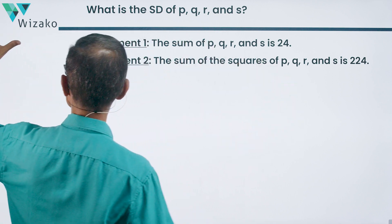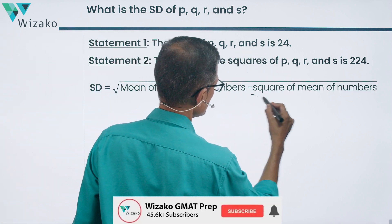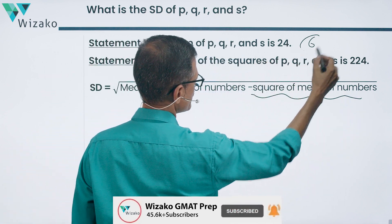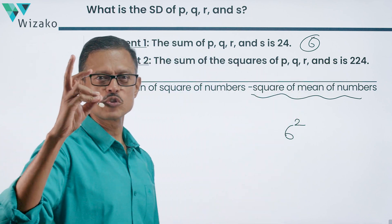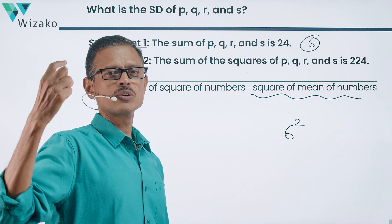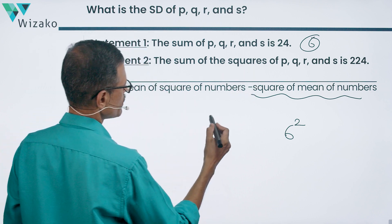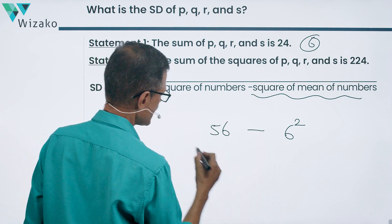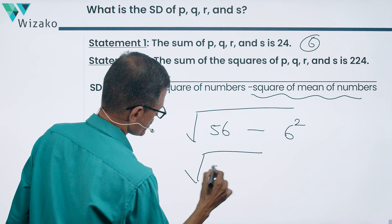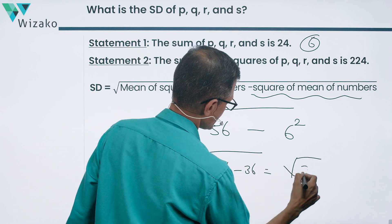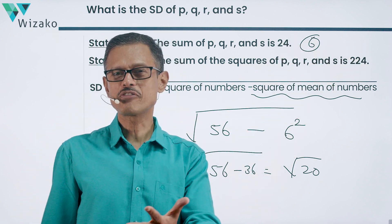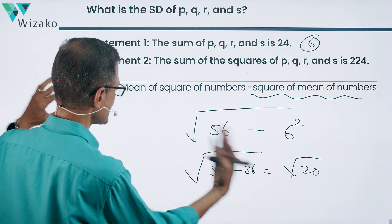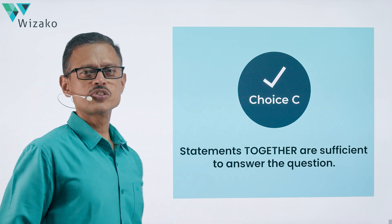Now combining both statements: from Statement 1 we have part two — the mean of the numbers is 6, so six squared is 36. From Statement 2 we have part one — the mean of the squares is 56. So the standard deviation equals √(56 − 36) = √20. Root 20 is the answer. You don't even need to fully solve it — you just need to confirm both parts of the formula are available, giving a unique value. The answer is Choice C.